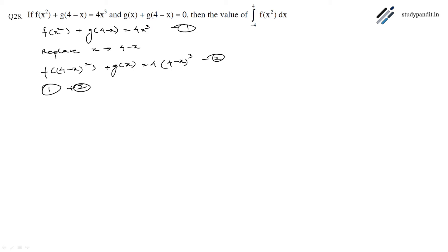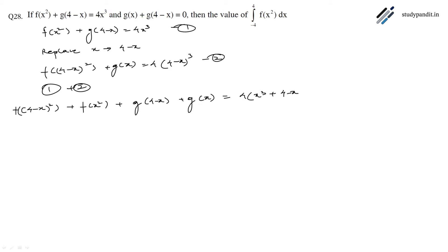We will add both equations (1 + 2). Then we will get f((4 - x)²) + f(x²) + g(4 - x) + g(x) = 4[x³ + (4 - x)³]. As given in the equation, the value of g(x) + g(4 - x) = 0, so this term will be 0.